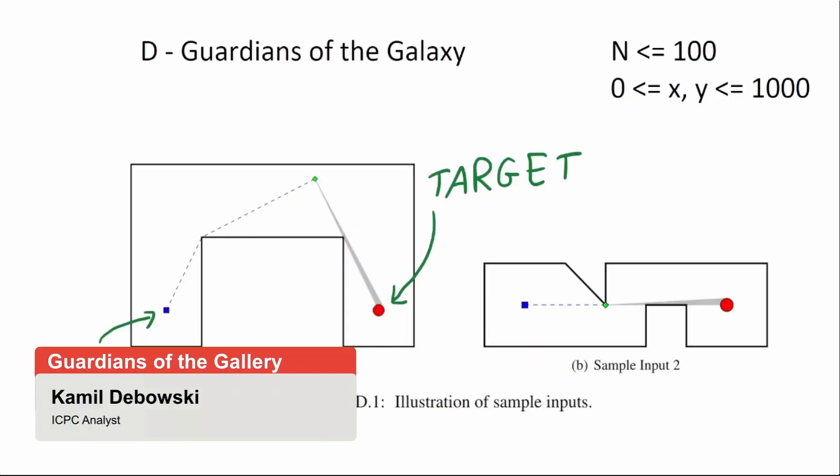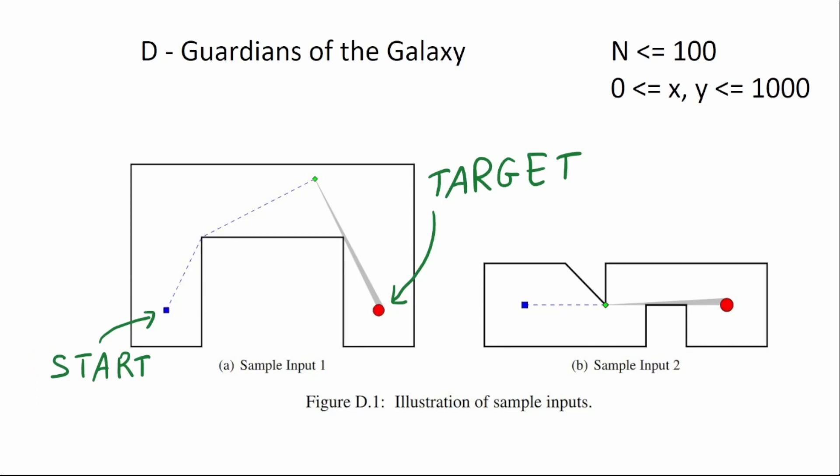Let's talk about problem D, Guardians of the Galaxy. This was one of the most difficult problems today. It's geometry. We are given a polygon with n up to 100 points and two special points, the start and the target.